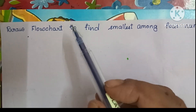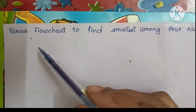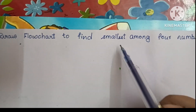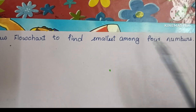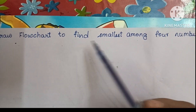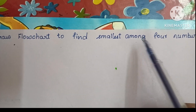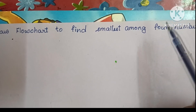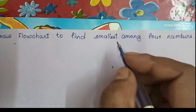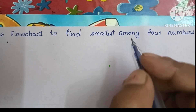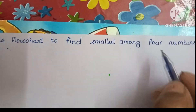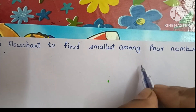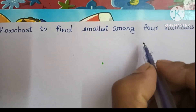Hi guys, in this video we're going to learn how to draw a flowchart to find the smallest among four numbers. We have to find the smallest among four numbers. A flowchart is a graphical representation of a solved problem.